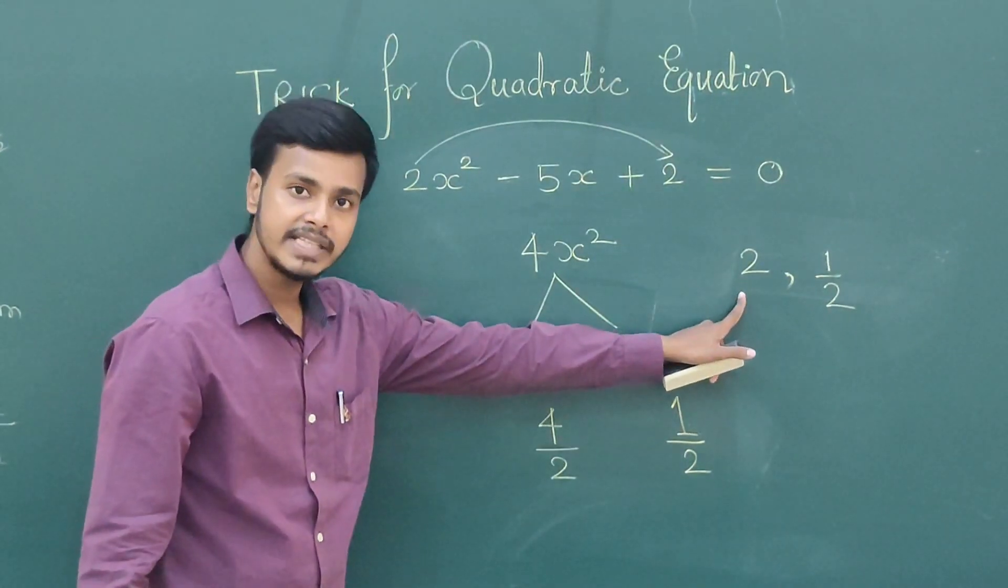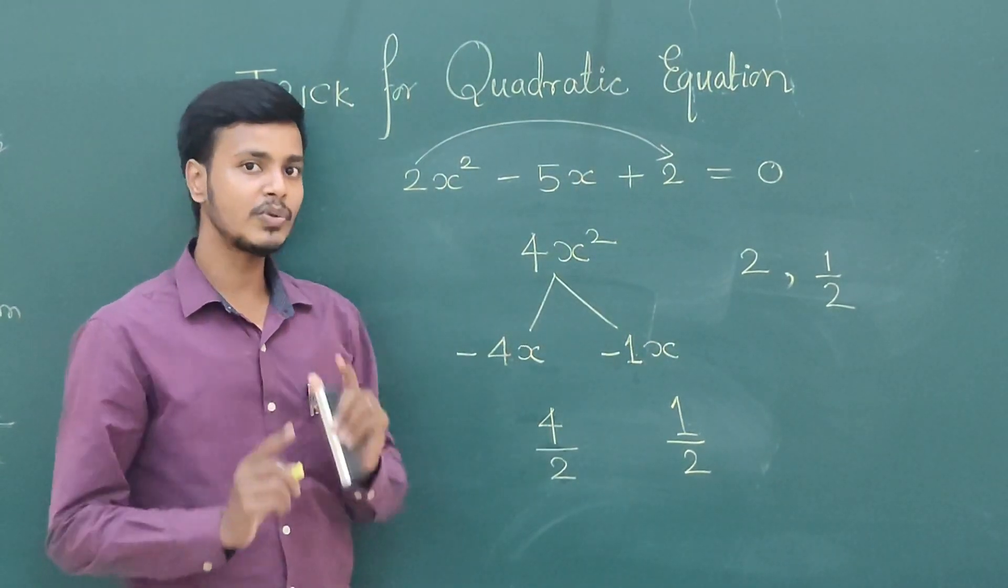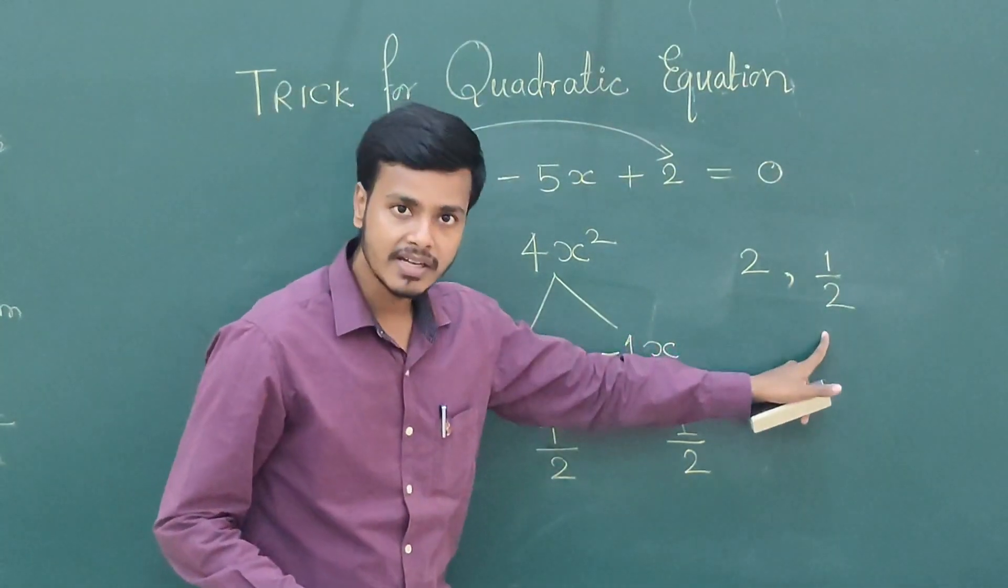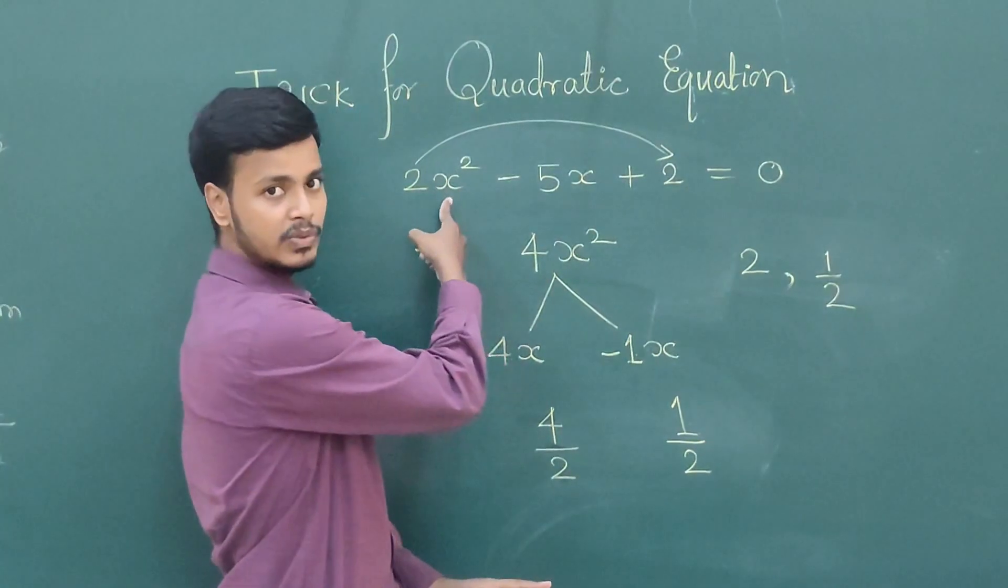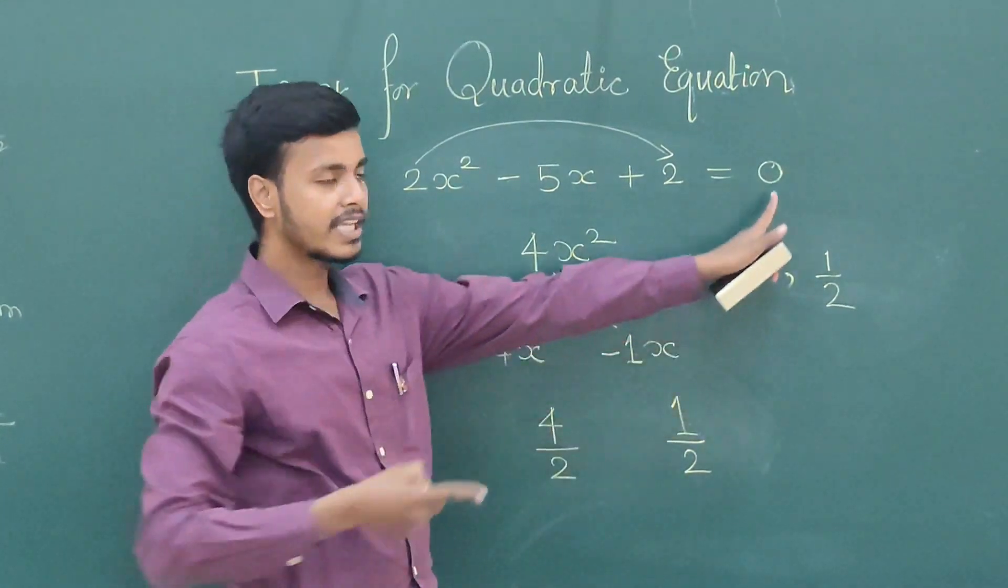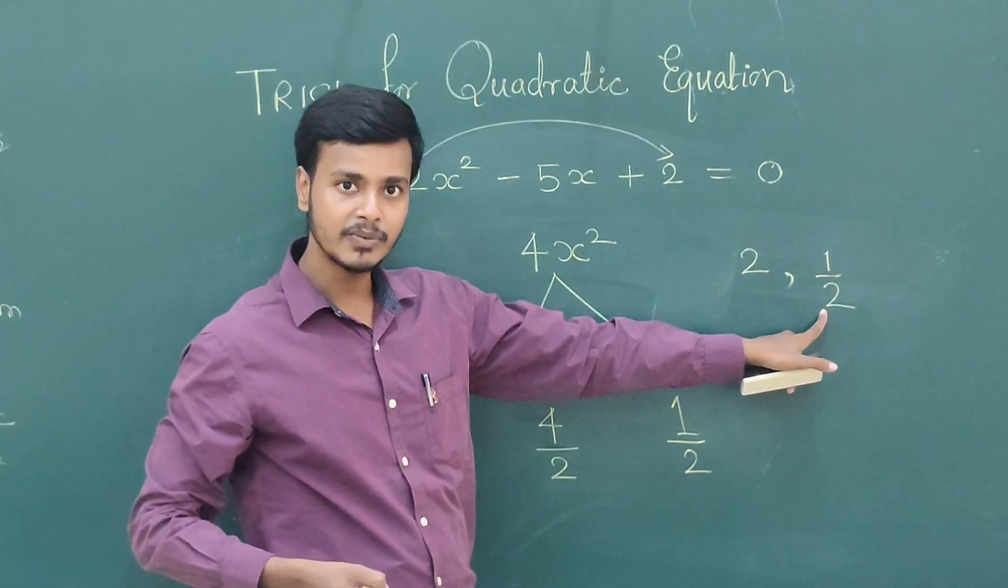So these are the roots of this quadratic equation. If you want to check whether these roots are correct or not, what you need to do? Substitute x equals 2. If you are getting 0, this is the root. Similarly you can verify for 1 by 2.